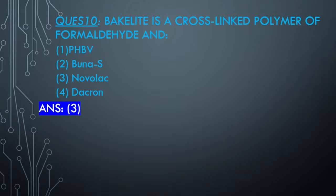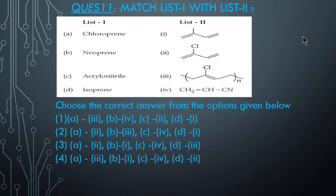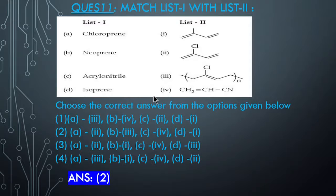I don't think I need to say anything because we have seen this previously. Question 12: Match the following. The answer: A matches to second - chloroprene - we have seen chloroprene gives Neoprene. B matches to third - Neoprene polymer structure. C - acrylonitrile matches to fourth, which we have seen. D - isoprene matches to first.